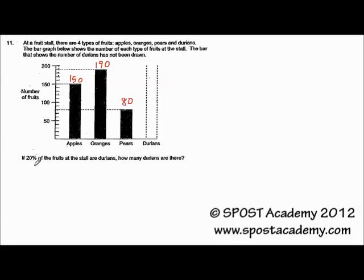Now we know that 20% of the fruits are durians, which means that apples plus oranges plus pears will actually make up 80%.